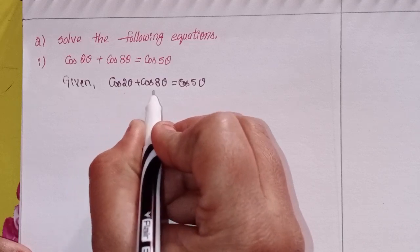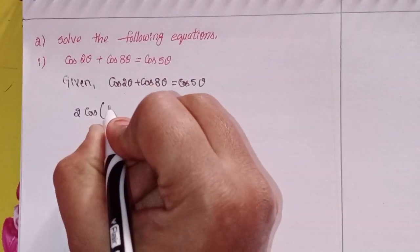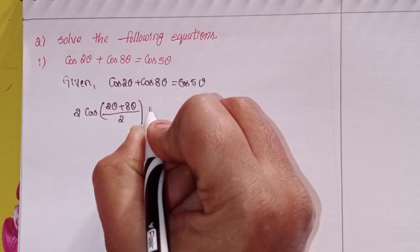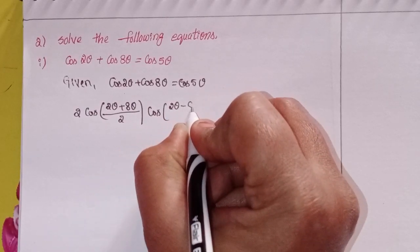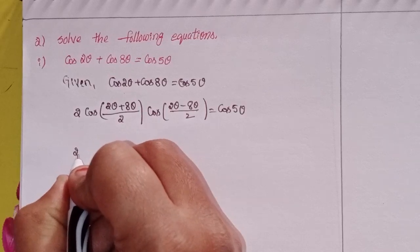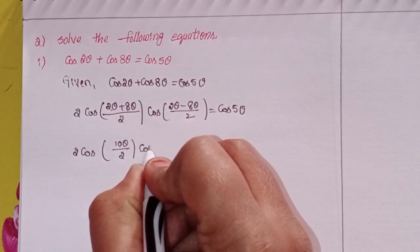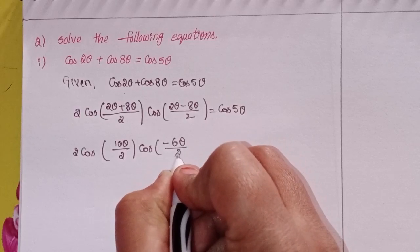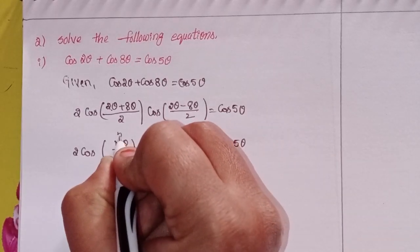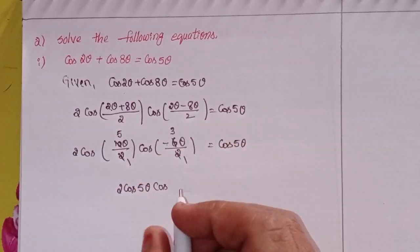I will apply here the cos C plus cos D formula: 2·cos((C+D)/2)·cos((C-D)/2). That gives 2·cos((2θ+8θ)/2)·cos((2θ-8θ)/2) equals cos5θ. That is 2·cos(10θ/2)·cos(-6θ/2), which is 2·cos5θ·cos(-3θ), equals cos5θ.